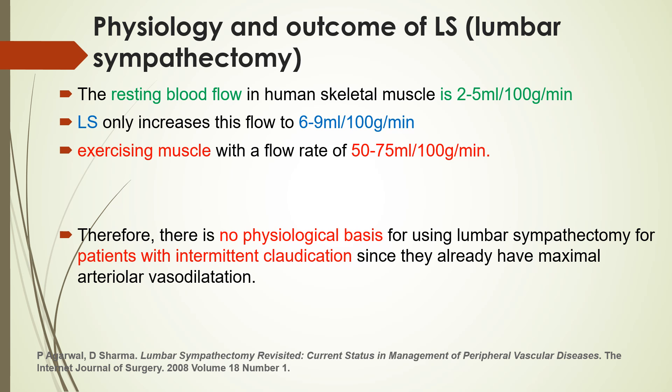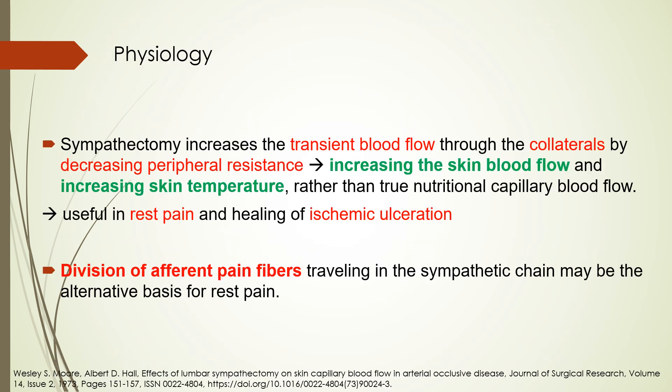Regarding the physiology and outcomes of lumbar sympathectomy: the resting blood flow in human skeletal muscle is about 2 to 5 milliliters per 100 grams per minute. Lumbar sympathectomy increases this up to 6 to 9 milliliters, and exercise muscle flow up to 50 to 75 milliliters. Sympathectomy increases transient blood flow through collaterals by decreasing peripheral resistance, increasing skin blood flow, and increasing skin temperature.